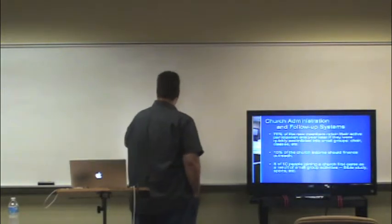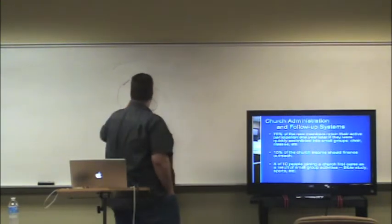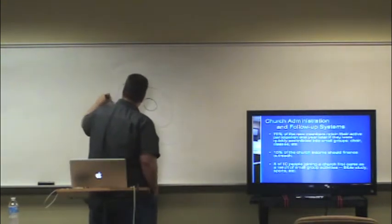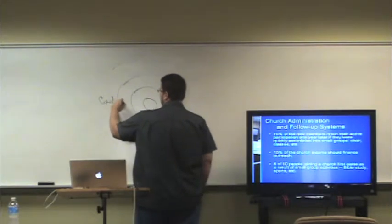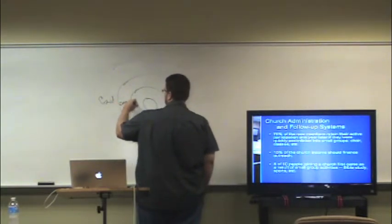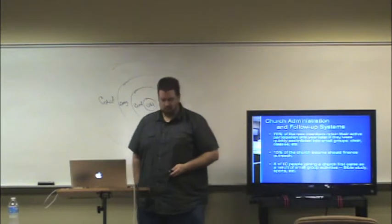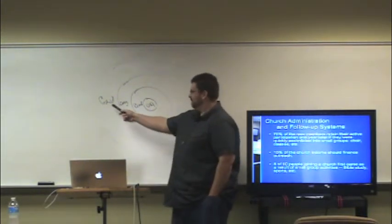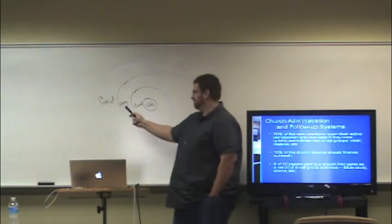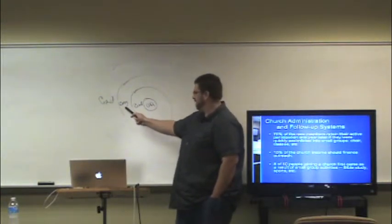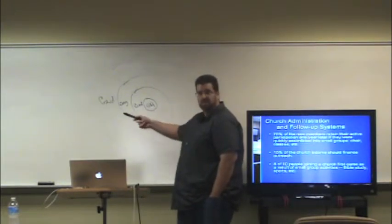Rick Warren describes it with concentric circles. You've got the crowd, then the congregation, then the committed, and then the core — from the Purpose-Driven Life. As a church, you need a system that moves somebody from the crowd to the congregation. How do you get someone who came once or twice to become a regular attender? How do you get them from regular attender to an involved member? And then from involved to being a leader? These are systems of automation and follow-up.